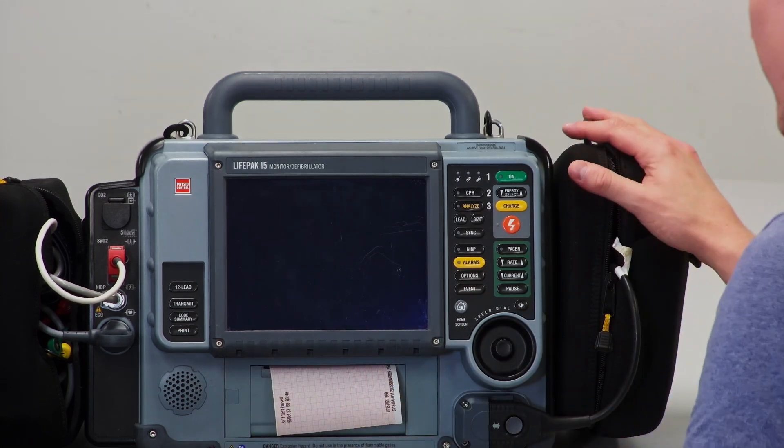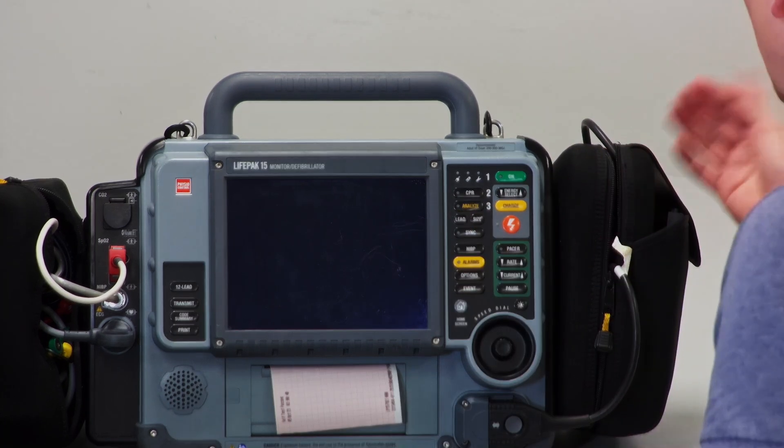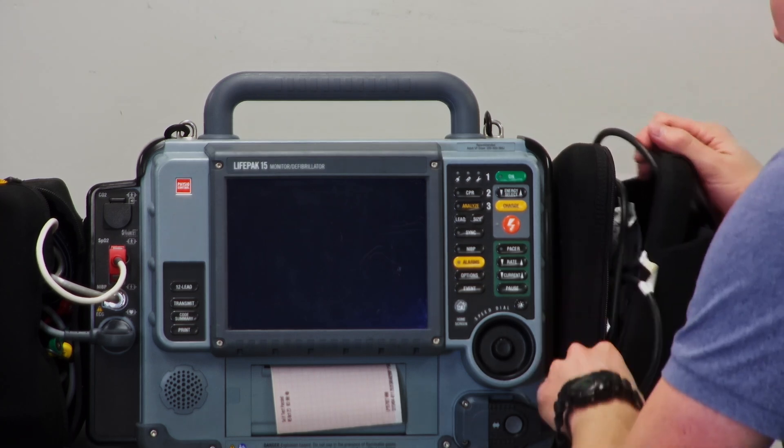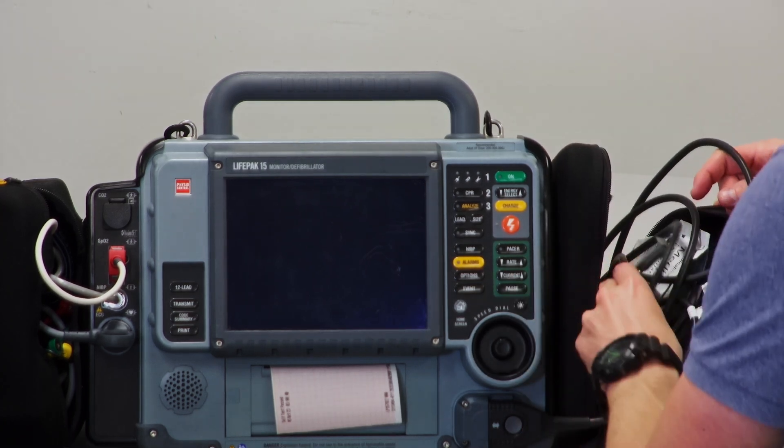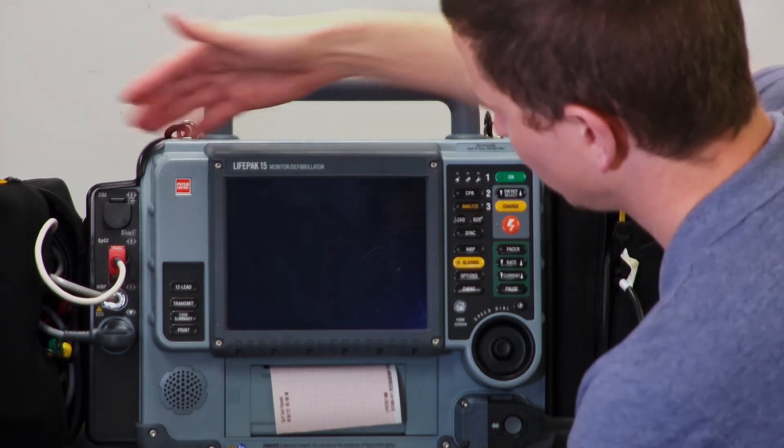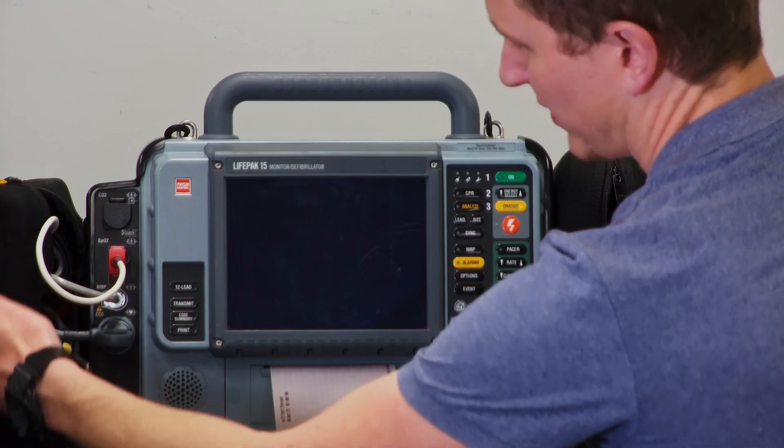On my right, or on the machine's left, are the pads and all those cables—whether you're looking for your pediatric pads, your adult pads, or your connector for the pads, that's where you'll find them. On the machine's right, or my left, are all your vital signs: your BP cuffs, SATs probe, and ECG leads.